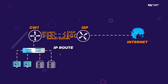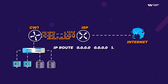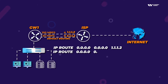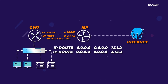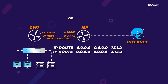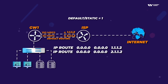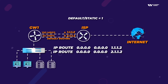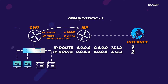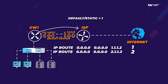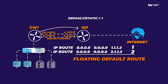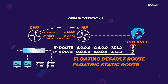With two ISP IPs — say 1.1.1.2 and 2.1.1.2 — you create two default routes: 'ip route 0.0.0.0 0.0.0.0 1.1.1.2' and a second one pointing to 2.1.1.2. To use the second as a backup, change its AD value. By default, static and default routes have AD value 1. Setting a higher AD value (like 2) makes it a floating static route — traffic automatically fails over if the primary link goes down.